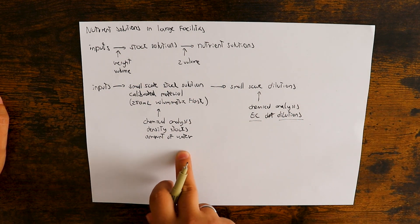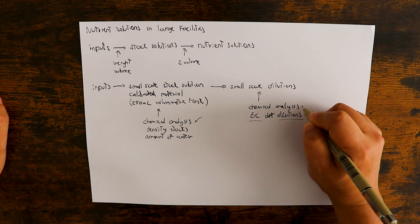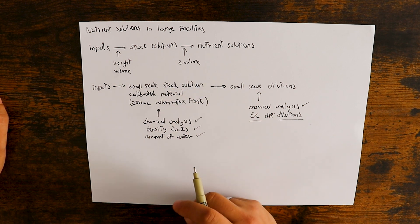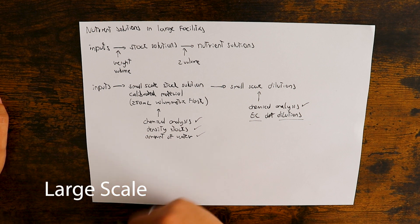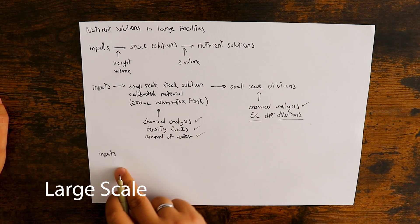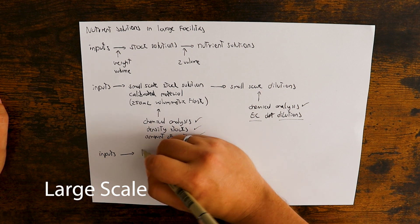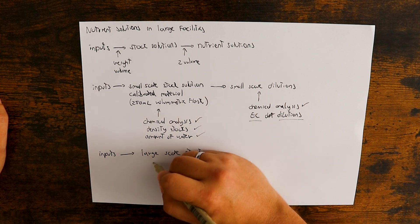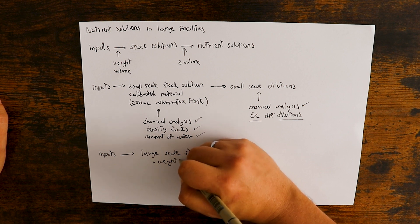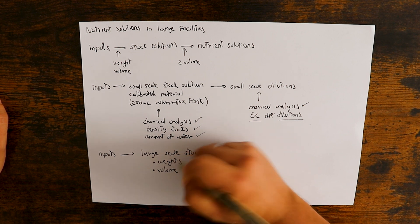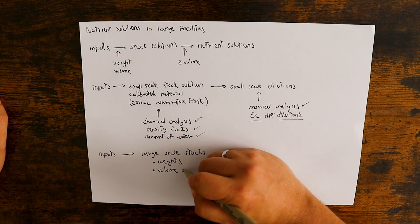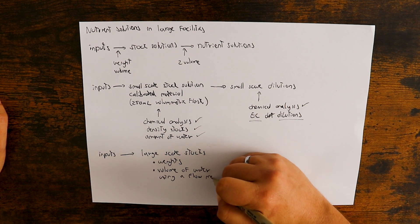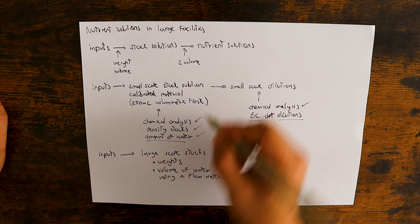Once you have done your small-scale preparations and determined the chemical analysis of both the stock solutions and the small-scale dilutions, you have the density of the stock solutions and you know the amount of water that goes into a preparation. Then we move to the larger scale. For the large-scale stock preparations, we measure our weights and we measure the volume of water needed using a flow meter, using the amount of water we determined from the small-scale preparation.